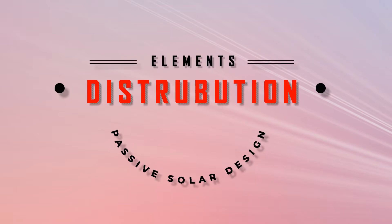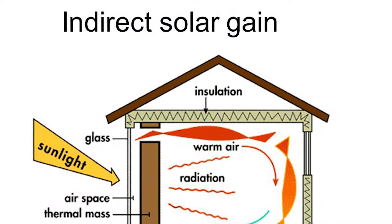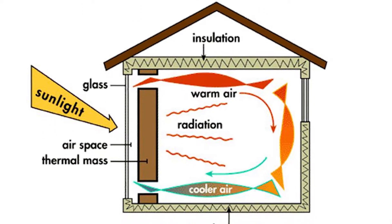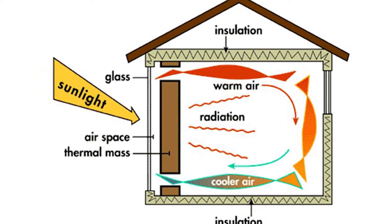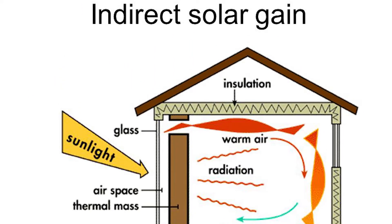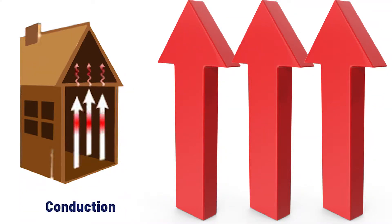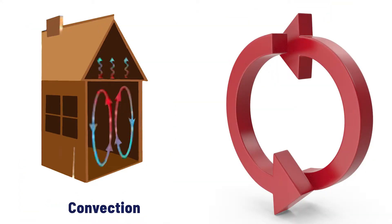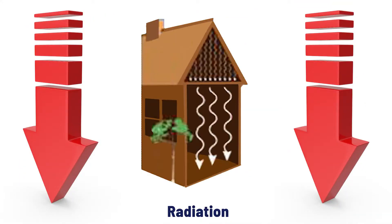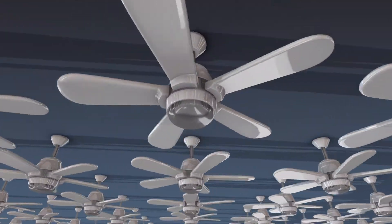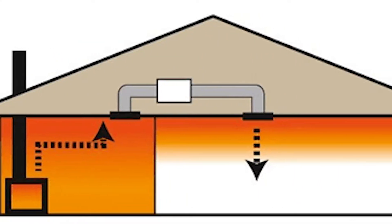Number three: Distribution. Distribution is the method by which solar heat circulates from the collection and storage points to the different areas of your house. A strictly passive design will use the three natural heat transfer modes: conduction, convection, and radiation. In some applications, fans and ducts may help with distribution of heat through the house.